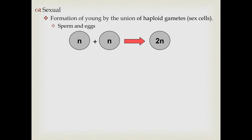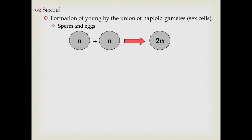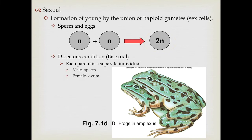Now let's move on to sexual reproduction. Sexual reproduction involves the formation of young, typically by the union of haploid gametes — the sex cells — which we designate as either sperm or eggs. By definition, sperm are the smaller, more mobile gametes, and eggs are the larger, less mobile gametes. These gametes are haploid, meaning they have half the amount of DNA as the adult. When a sperm and egg combine, N plus N gives you back the diploid 2N number.